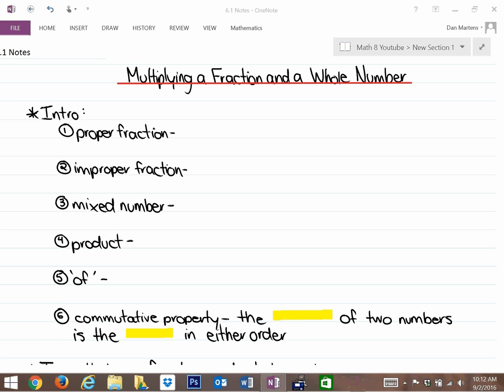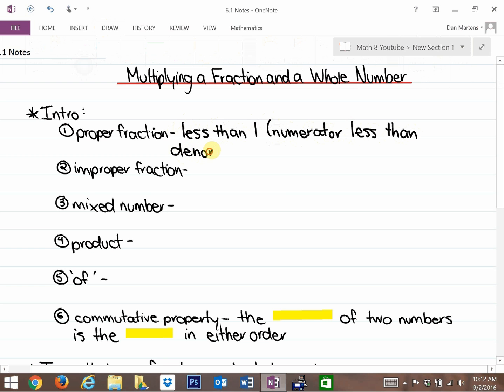First of all, we're looking at what is a proper fraction. Well, a proper fraction is a fraction that represents something less than 1. In other words, the numerator, which is the top number in a fraction, is less than the denominator, which is the bottom number, because it represents a fraction less than 1.